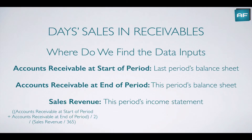So where do we find the data inputs? Accounts receivable at the start of the period is found from last period's balance sheet — not the current balance sheet, but last period's. Accounts receivable at the end of the period comes from this period's current balance sheet. And sales revenue is found in this period's income statement.